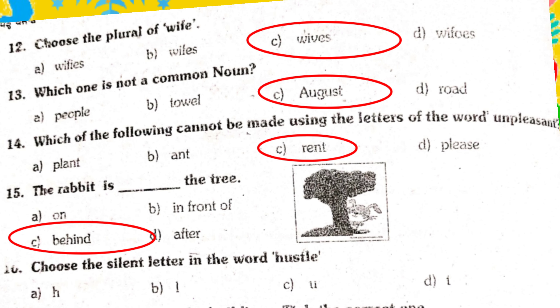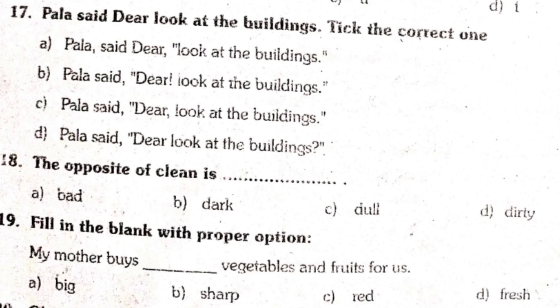So dear students, T is the silent letter in this word. 'Hustle' hota hai, 'hustle' nahi hota. Theek hai bacho?